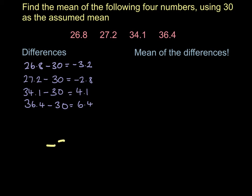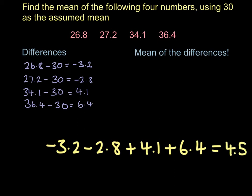If we take those four numbers, negative 3.2 add negative 2.8, so that's the same as subtract 2.8, plus 4.1, plus 6.4. And if we add them together, we're going to get 4.5.